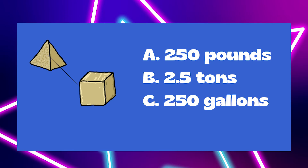The massive block in an Egyptian pyramid — let me give you a clue: this is going to be really, really heavy. So do we think 250 pounds, 2.5 tons, or 250 gallons? A lot of you are saying let's get rid of the gallons because we're talking about weight. You got it — 2.5 tons.